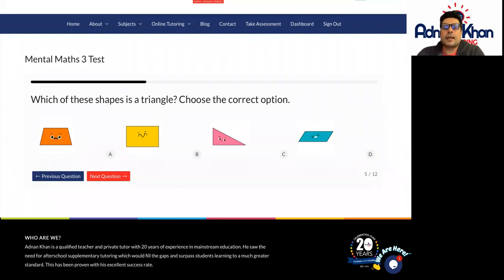So is it shape A? I don't think it's going to be shape A because shape A is what we call a trapezium. So shape A is a trapezium.